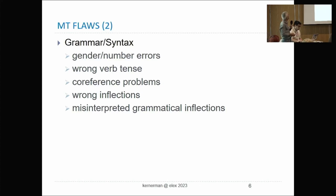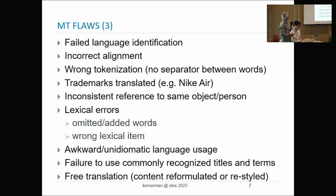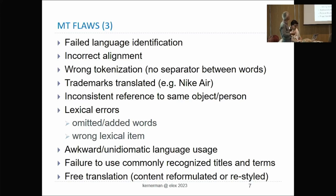Flaws include grammar and syntax issues: grammatical gender, number, wrong verb tenses, co-reference problems, inflections, and misinterpretation. There are lots of problems with machine translation — this is just a list taken from papers on machine translation. Problems include trademarks, like 'Nike Air', where 'Air' is being translated rather than recognized as a named entity.